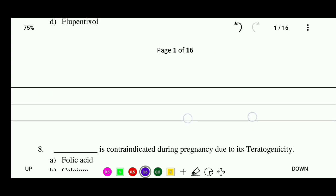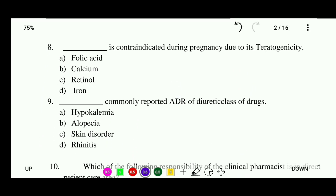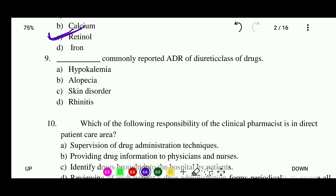Question 8: Which drug is contraindicated during pregnancy due to its teratogenicity? Options: folic acid, calcium, retinol, or iron. The correct answer is retinol, which is contraindicated during pregnancy.